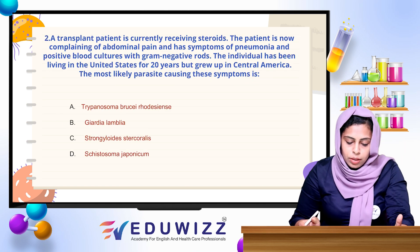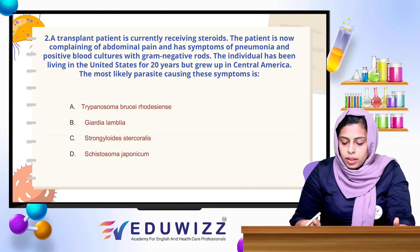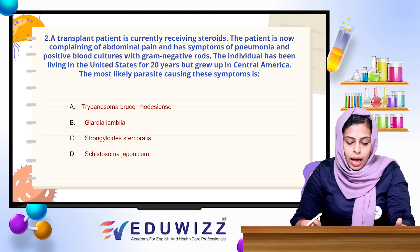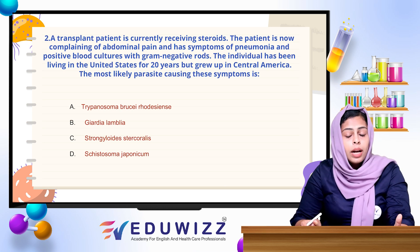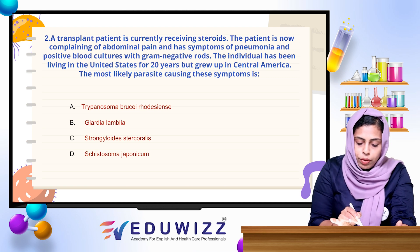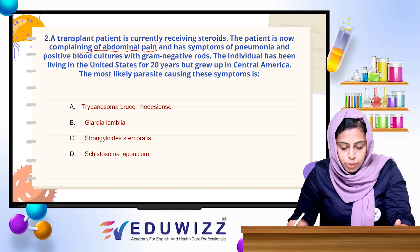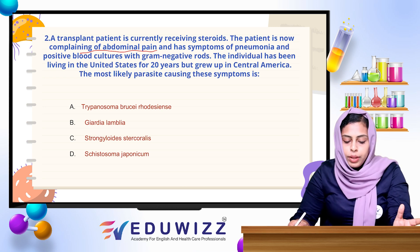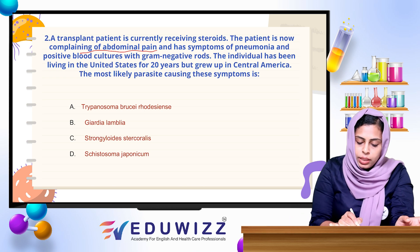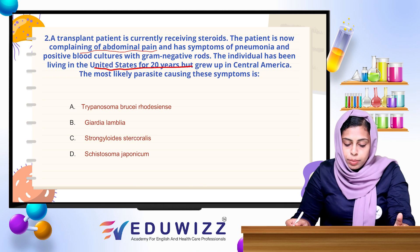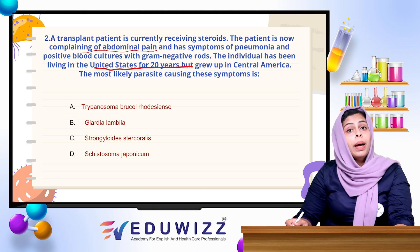Next question: A transplant patient currently receiving steroids is complaining of abdominal pain and has symptoms of pneumonia and a positive blood culture with gram-negative rods. The individual has been living in the United States for 20 years. What is the reason for this parasite?